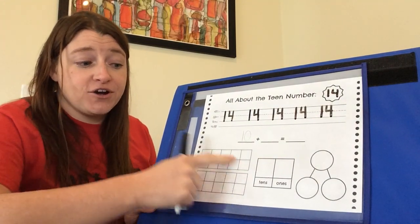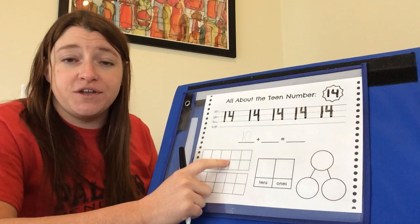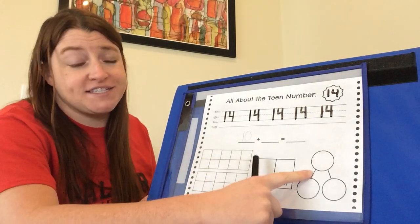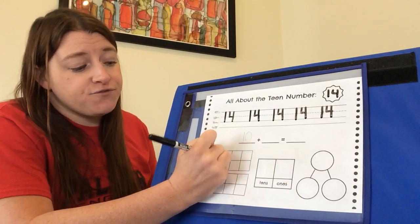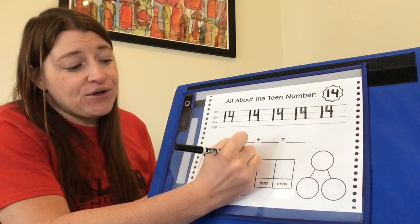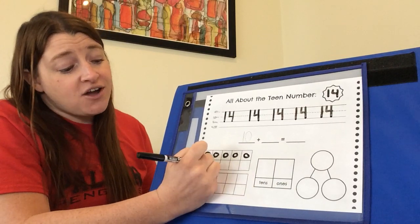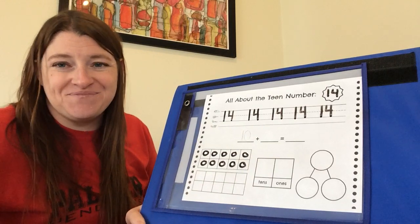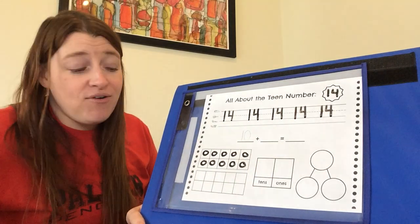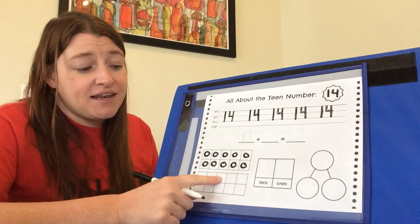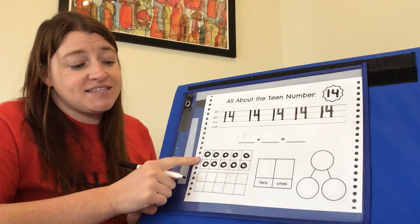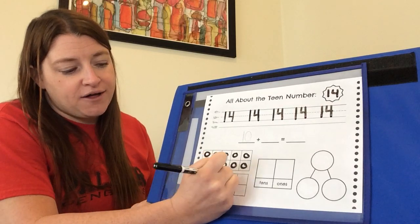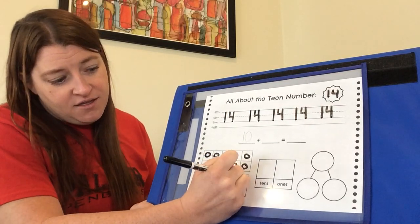Okay, just like yesterday, we're going to go first to our double 10 frame to show the number 14. Seeing it in a 10 frame just really helps make the rest of this make sense. So like all teen numbers, 14 has a full group of 10. So we start by filling in our first 10 frame. Fill in all the way. Then we're going to count on and fill in some more ones in the second 10 frame. 10, 11, 12, 13, 14.